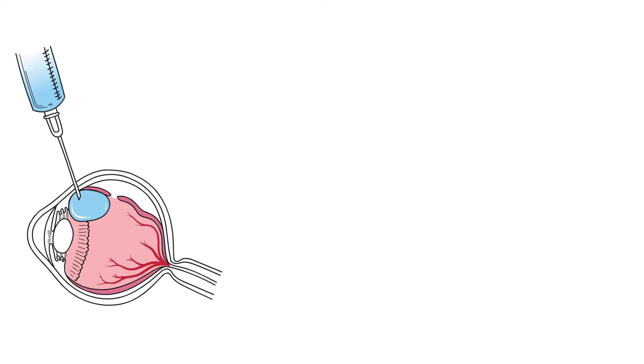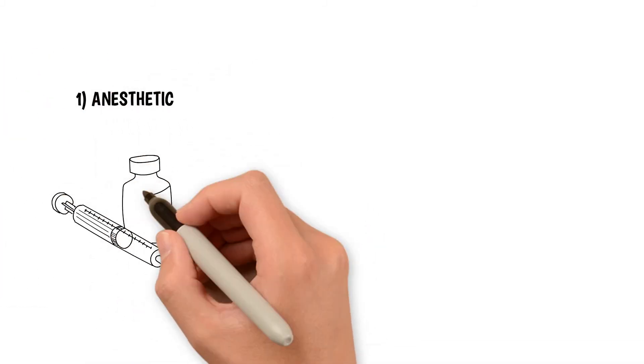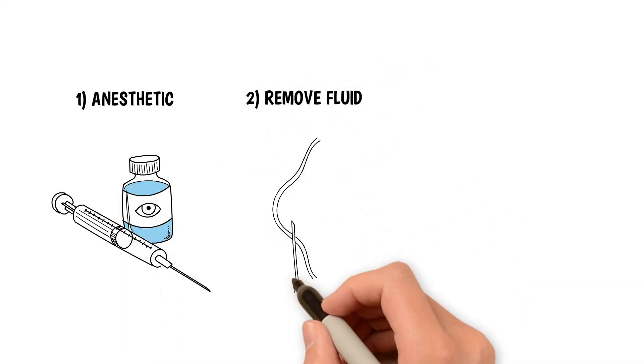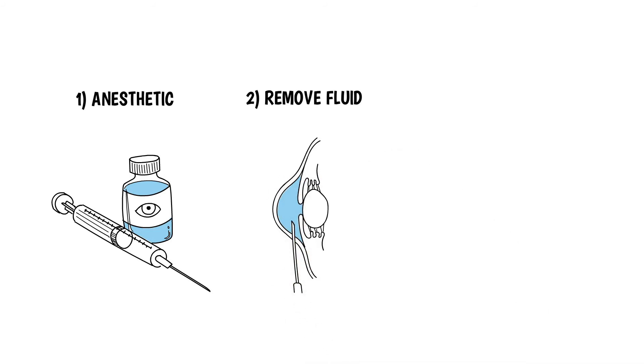Here's what to expect. First, a local anesthetic will be given, and the eye surface will be sterilized with eye drops. Next, the doctor will use a painless needle to remove fluid from the front of the eye. Removing this fluid is important, as it will create space for the gas bubble that will subsequently be placed in the eye.